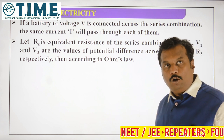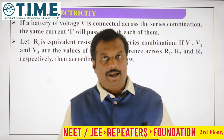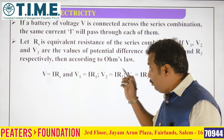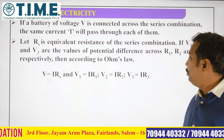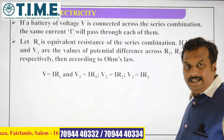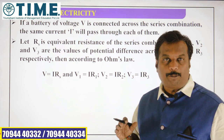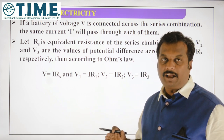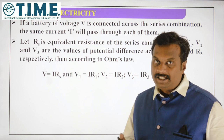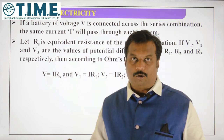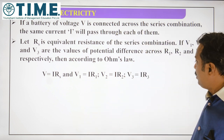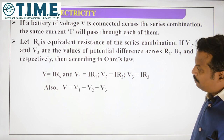We all know Ohm's law: V = IR. So V = IRS, V1 = IR1, V2 = IR2, and V3 = IR3. We know that in series combination the current is the same — I1 = I2 = I3 = I. So IRS = IR1 + IR2 + IR3.